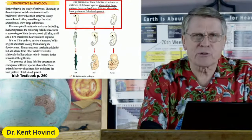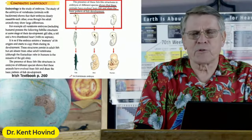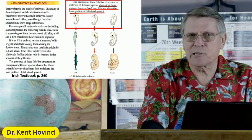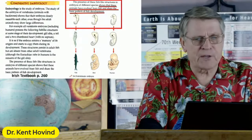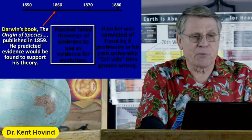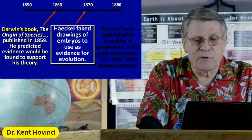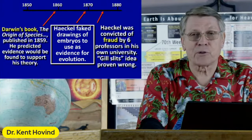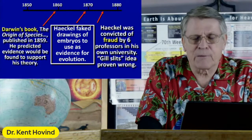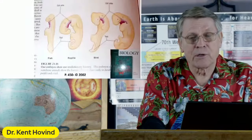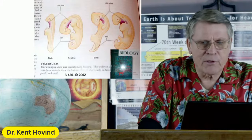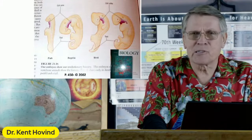Why not refer to it as a suit-jacket pocket or a glove compartment? It's a fold of skin — don't use the word 'gill,' that's deceitful. Darwin wrote his book in 1859, Haeckel made his drawings in 1869, proven wrong by 1874. Biology textbooks say 'our embryos show our evolutionary history' — no they don't. Stop calling them gill slits. They're not educating students, they're indoctrinating them.